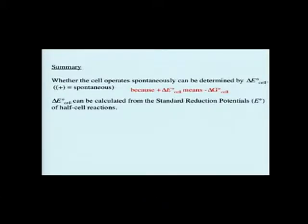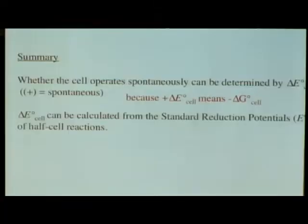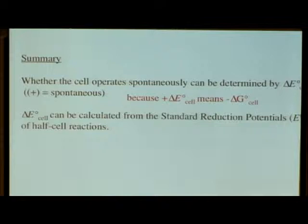So again, whether something is spontaneous or not comes back to our friend delta G. So if a cell is operating spontaneously, that means you're going to have a delta E naught of the cell that's positive, which means that the delta G of the cell will be negative. And we can calculate these delta E naughts of the cell from the standard reduction potentials.